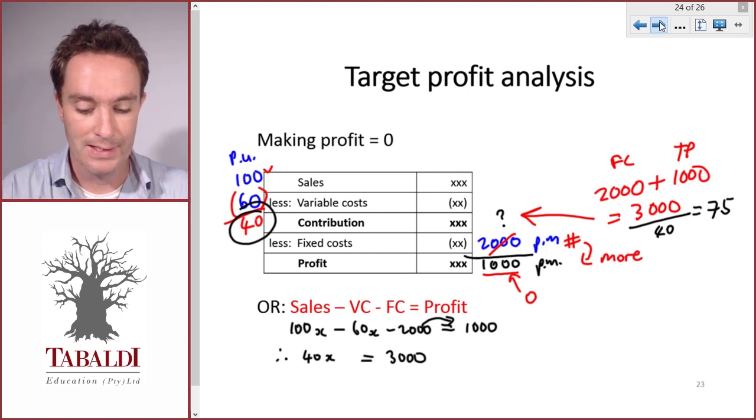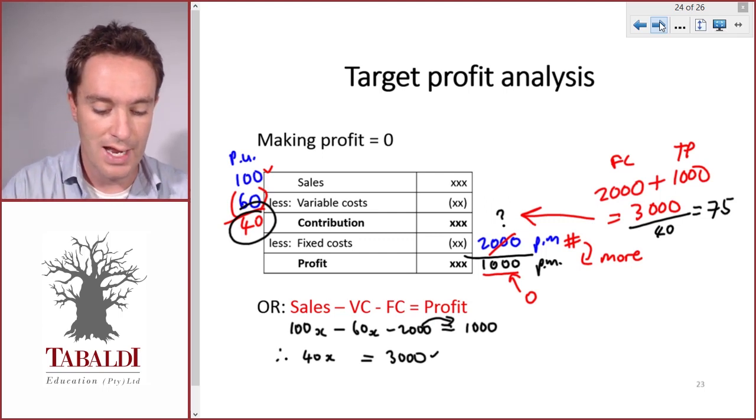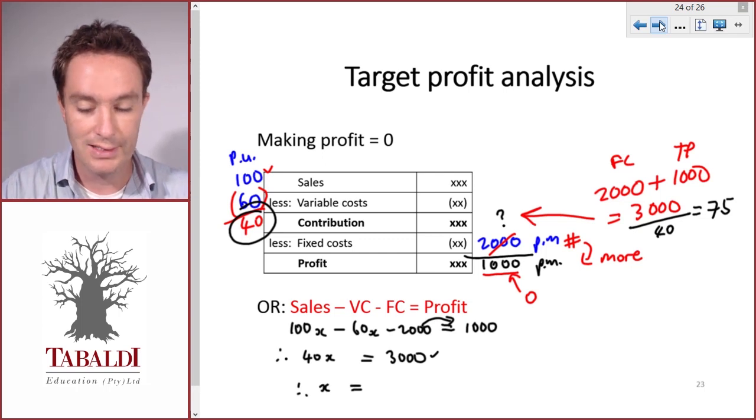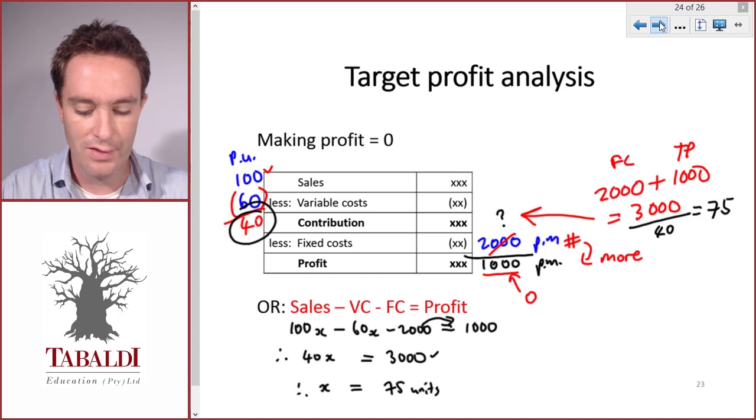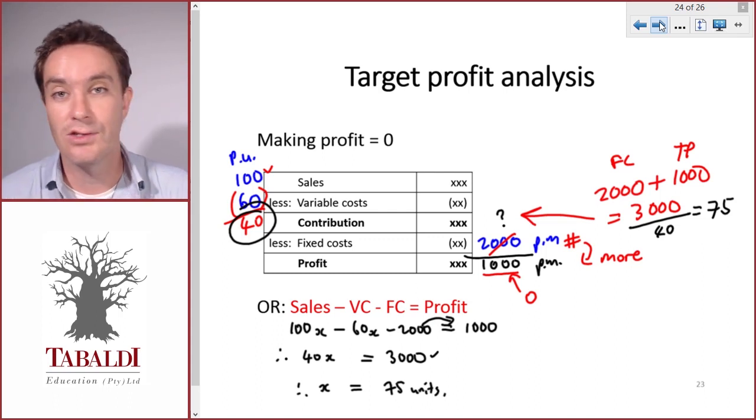And now we solve for x by dividing by 40 on either side of the equation, and we get 75 units in order to make a target profit of $1,000.